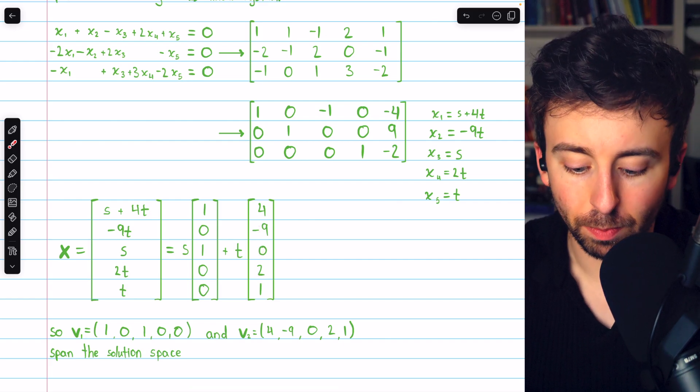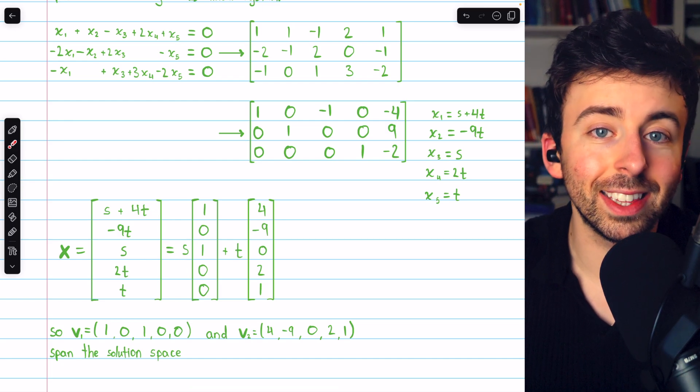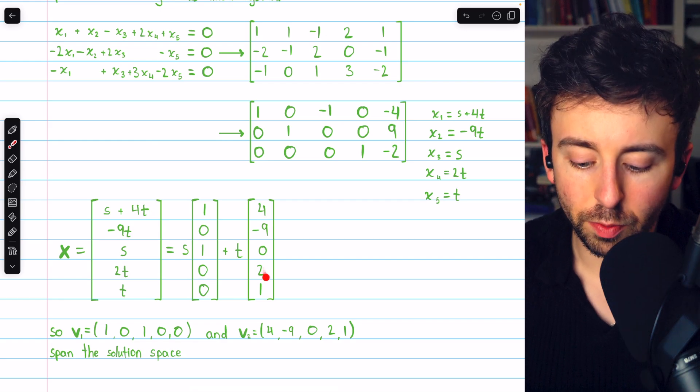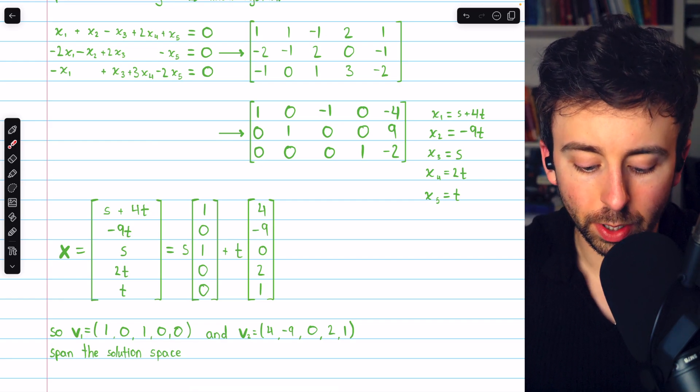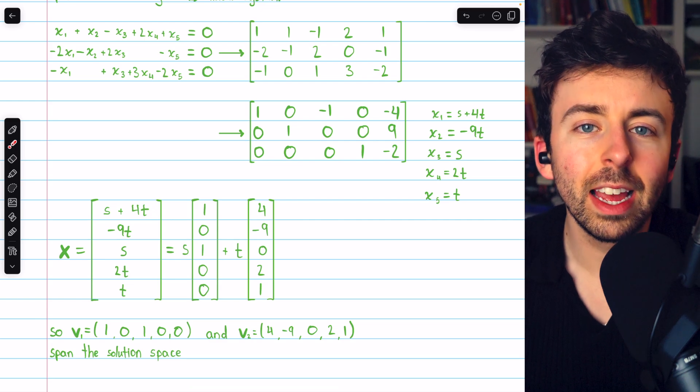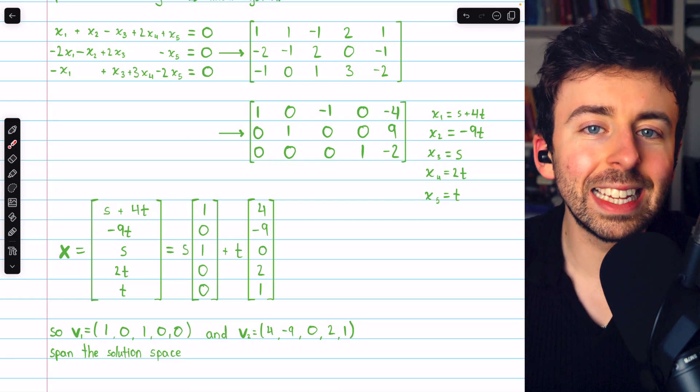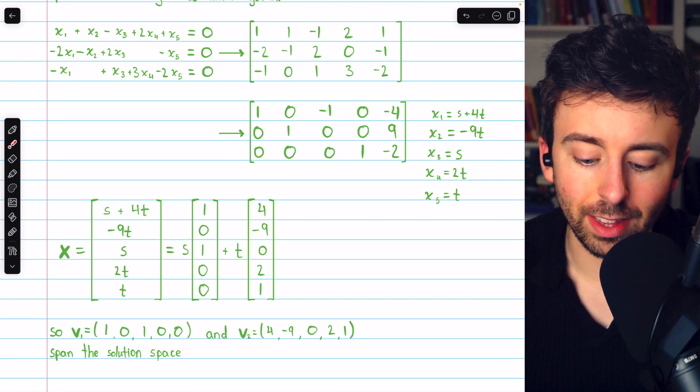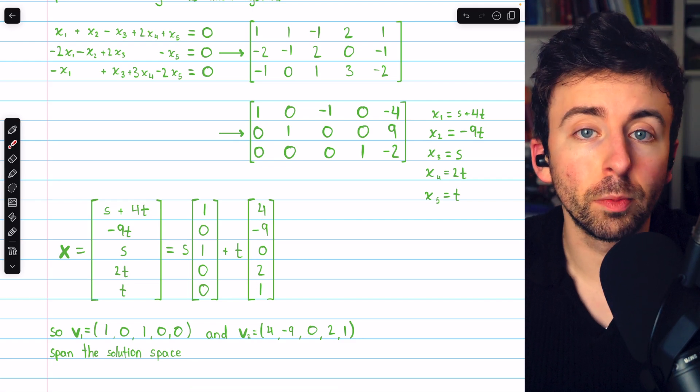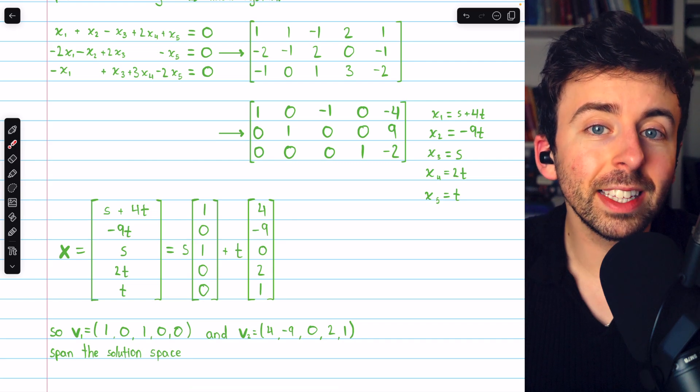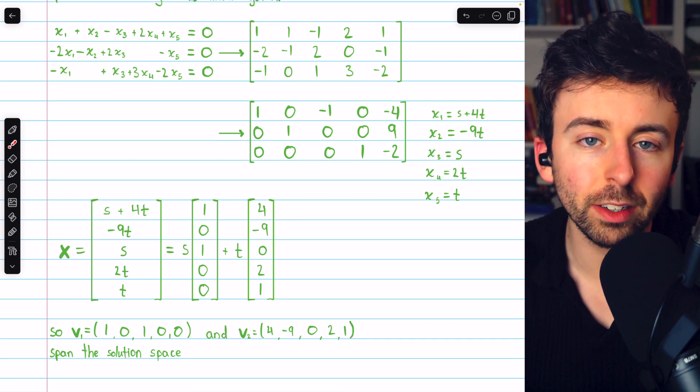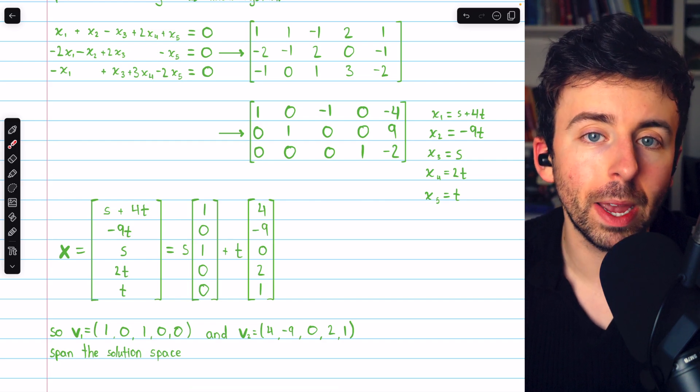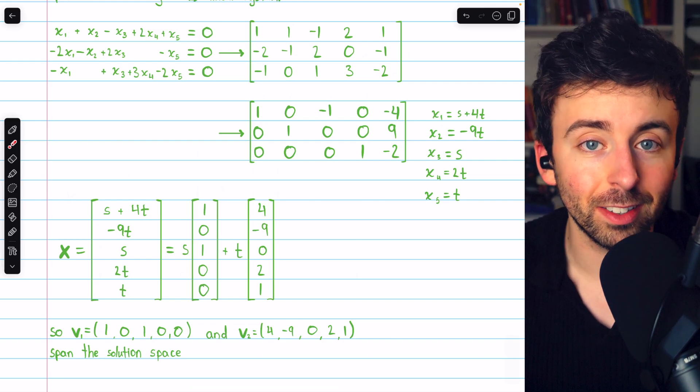So these two vectors together span the solution space. By combining multiples of these two vectors, we get the entire solution space to this system. So it's these two vectors, which we could call v₁ and v₂, that span the solution space. However, are the vectors linearly independent? The answer is yes. It's pretty easy to see that these vectors are not scalar multiples of each other, so they are linearly independent, and hence these two vectors together form a basis for the solution space. Hence, the dimension of the solution space is 2.